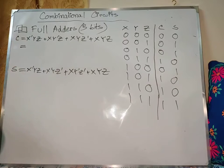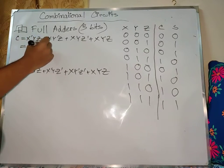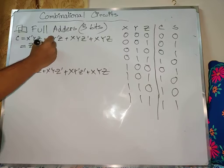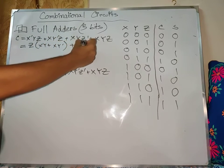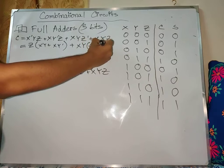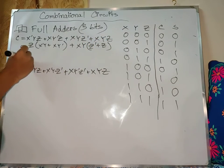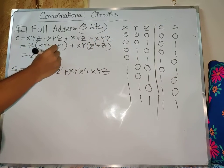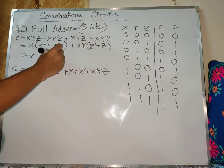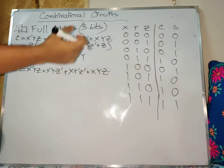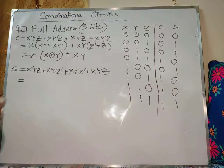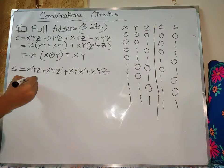So the function — x is common, z is common. x prime and xy are common. So we factor: x is common giving z prime plus z, and xy is common giving z prime plus z. I will simplify this function.